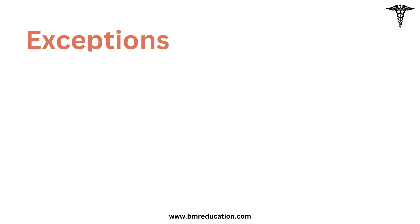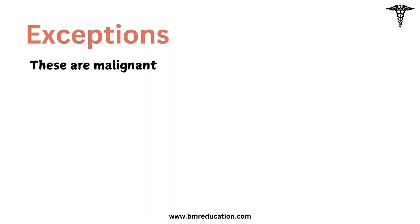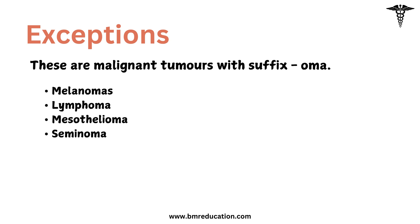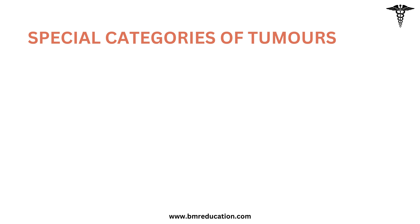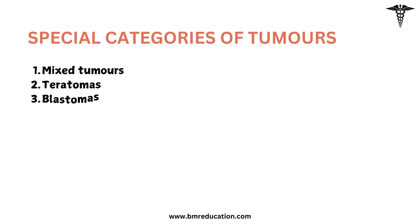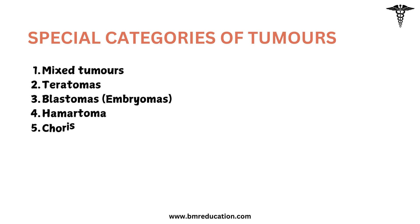However, there are some exceptions related to malignant tumors. These tumors are malignant but end with the suffix -oma. Those are melanoma, lymphoma, mesothelioma, and seminoma. There are also other types of tumors categorized based on their histological characteristics, behavior, and origin. They are mixed tumors, teratomas, blastomas or embryomas, hamartoma, and choristoma. These tumors defy the generalizations and nomenclature explained earlier.